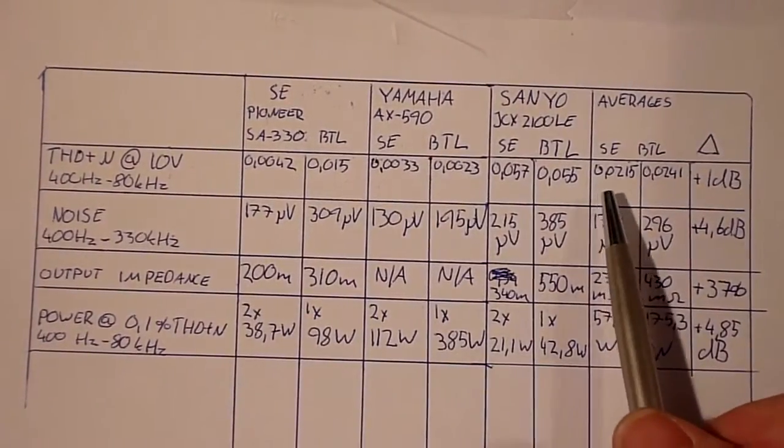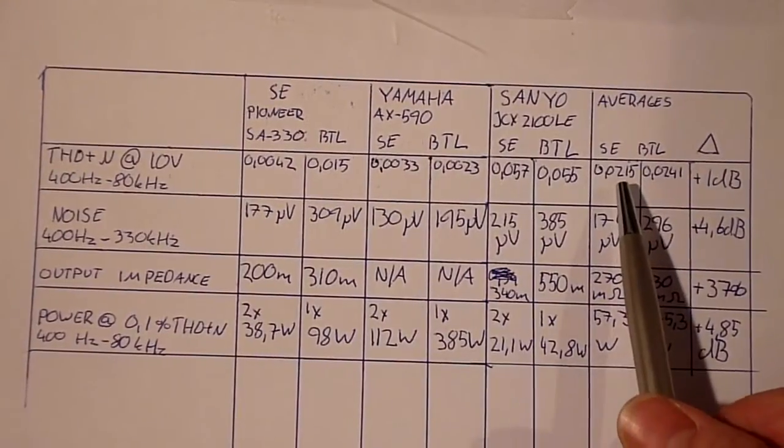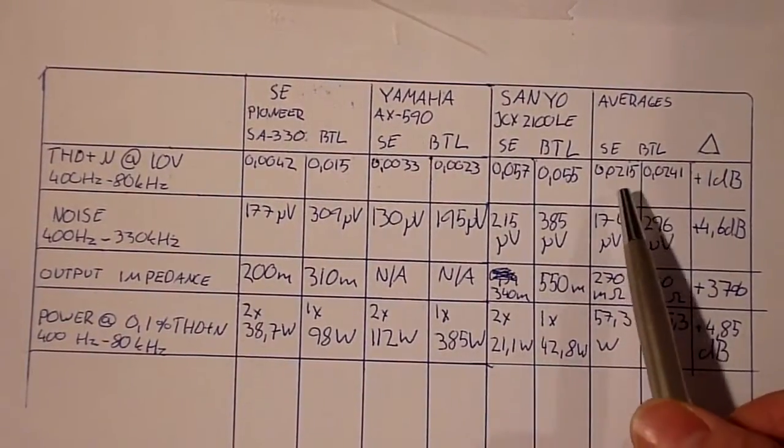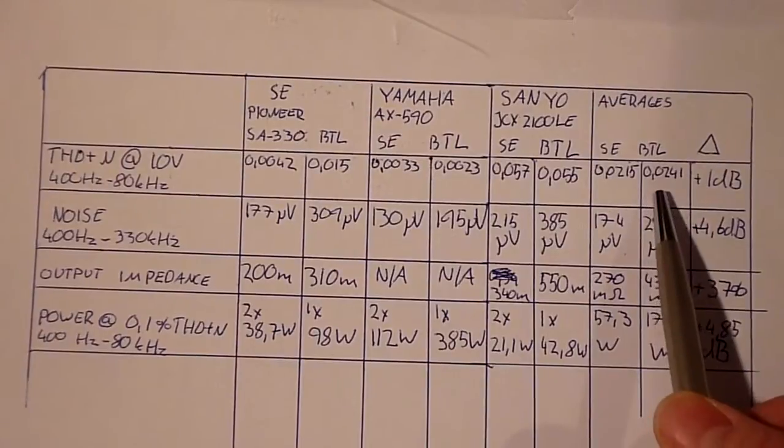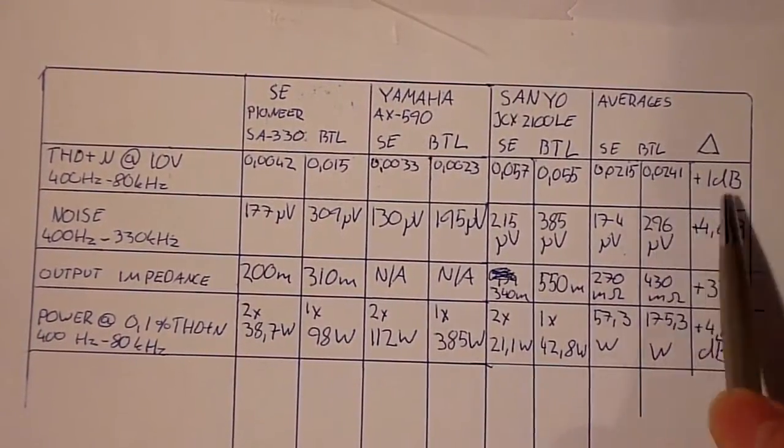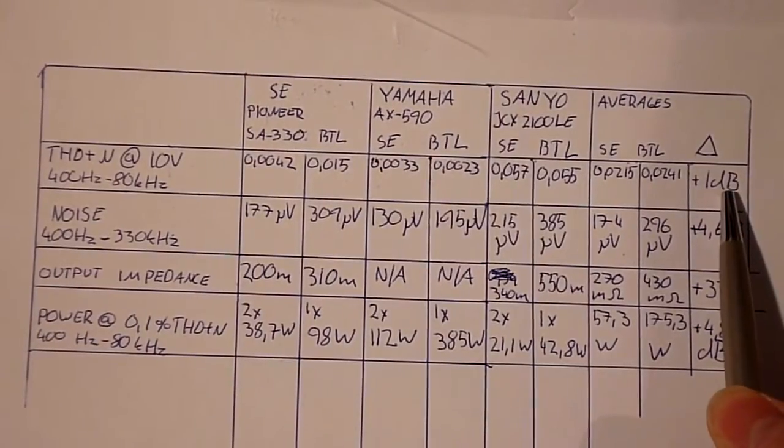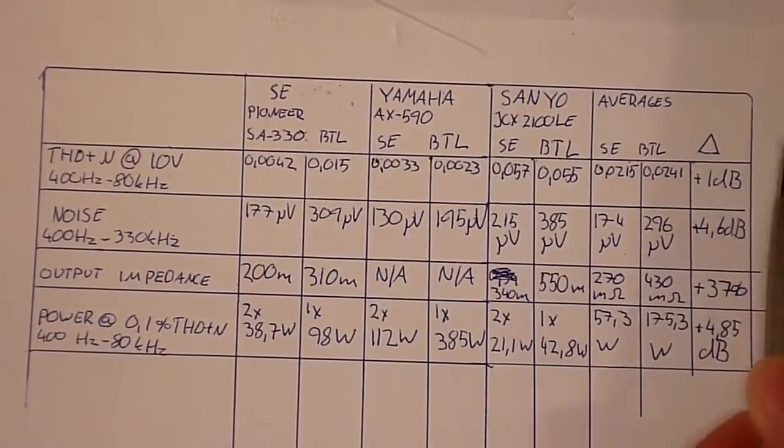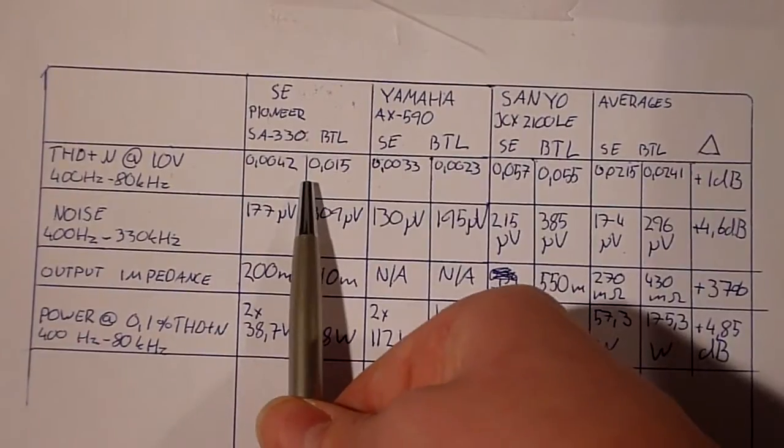The single-ended units averaged 0.0215% THD plus N, and the bridge-tied tests 0.0241. That's about a 1 dB difference, but most of it comes from the Pioneer.